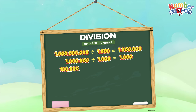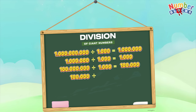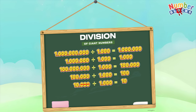One hundred million divided by one thousand is equals to one hundred thousand! One hundred thousand divided by one thousand is equals to one hundred! 10,000 divided by 1,000 is equals to 10. 1,000 divided by 1,000 is equals to 1.